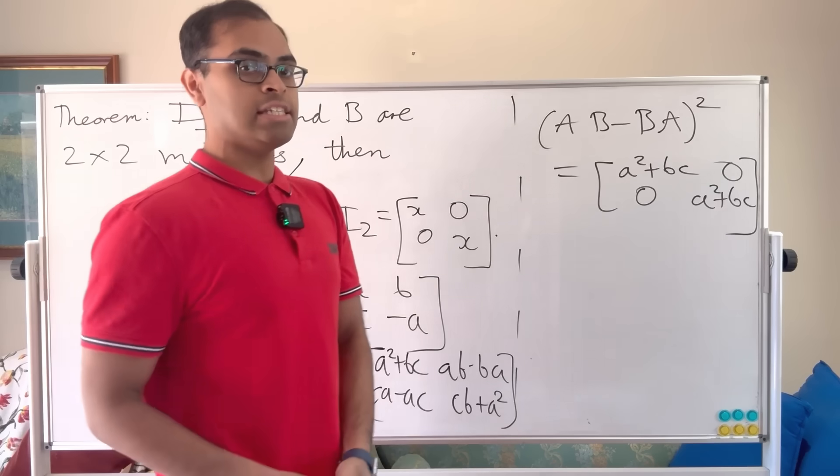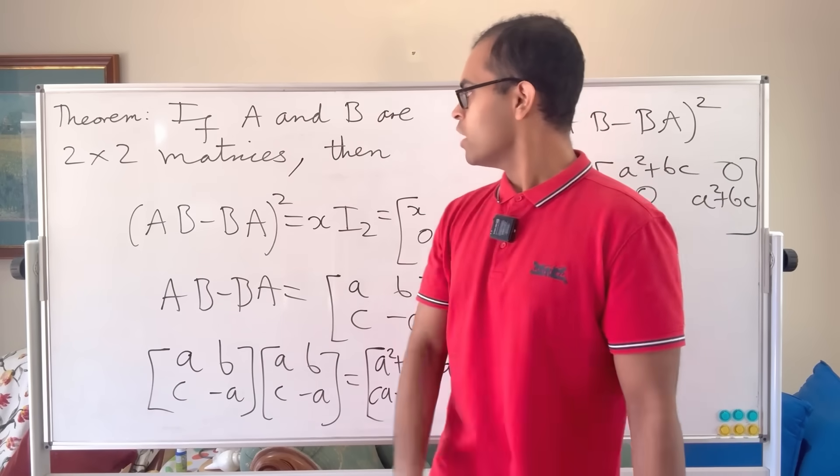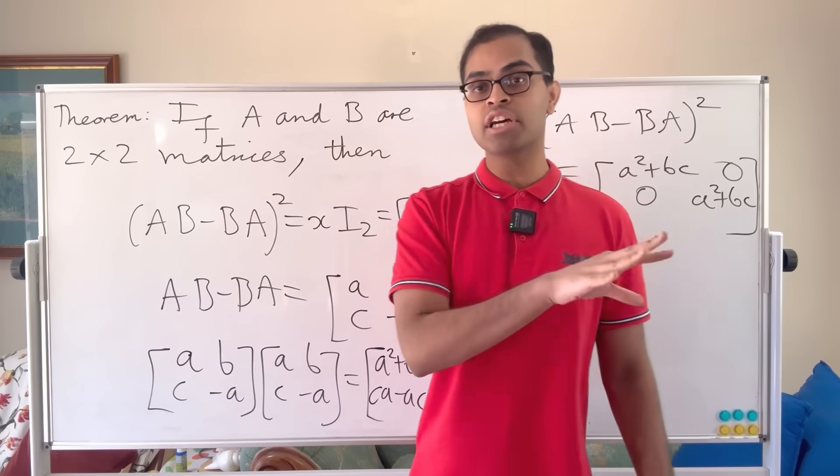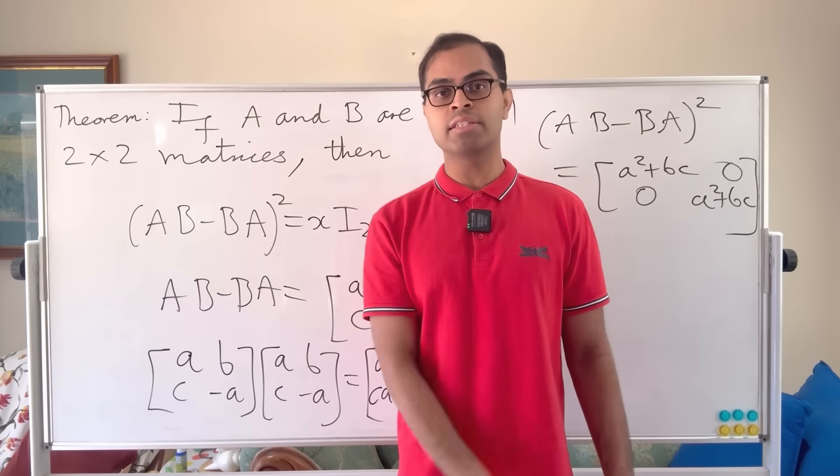Another way of stating this exercise, very beautiful, I saw it in Herstein's Topics in Algebra, is that if A and B are linear transformations from a two-dimensional vector space to itself,